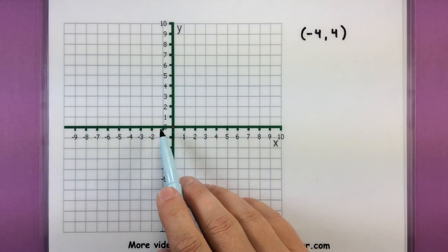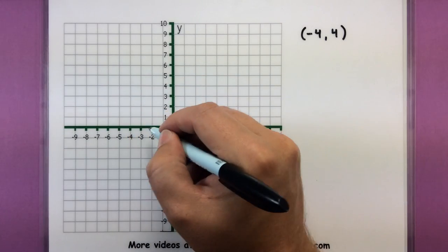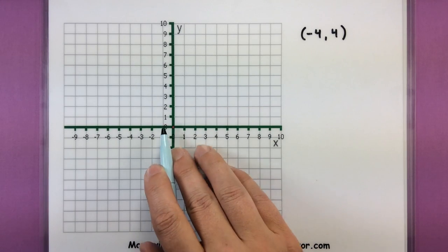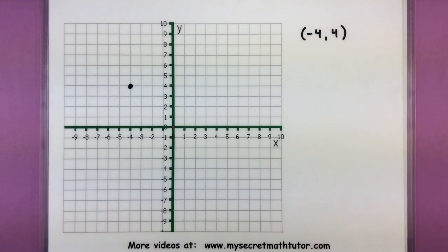And like before I just want to use my coordinate axes to mark out where this thing is. So negative 4 in the x-direction, positive 4 in the y-direction, there we have a point right there.